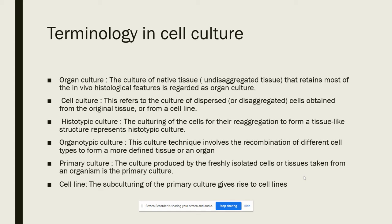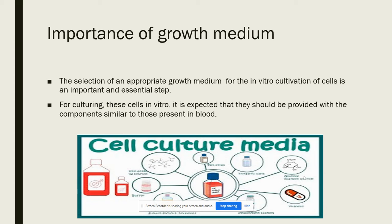When thinking about cell culture, there are many things required: infrastructure for a sterile and clean area, glassware vessels, equipment, aseptic conditions, sterilization, and growth medium. Growth medium is important for proliferation of cells, and aseptic conditions should be maintained throughout the culture. The selection of an appropriate growth medium for the in-vitro cultivation of cells is a very essential step.